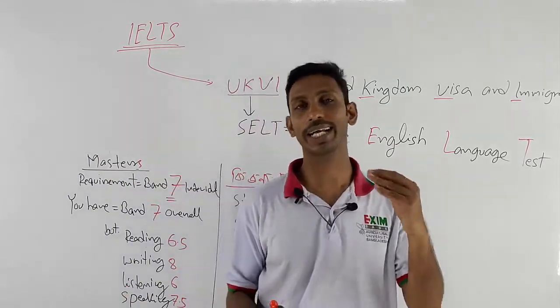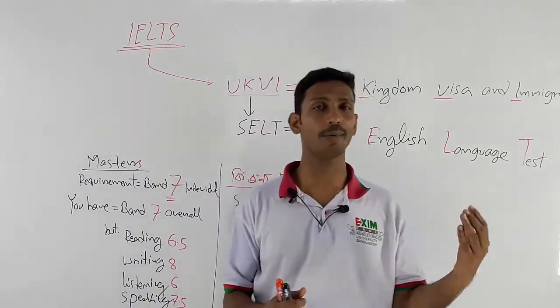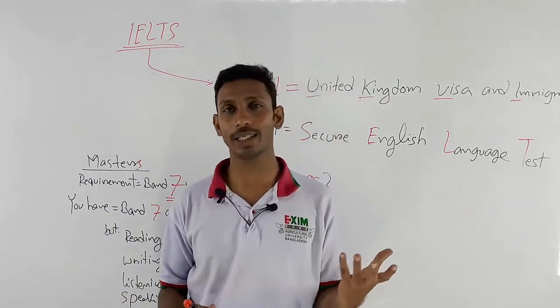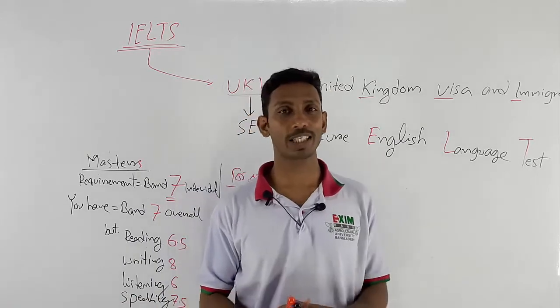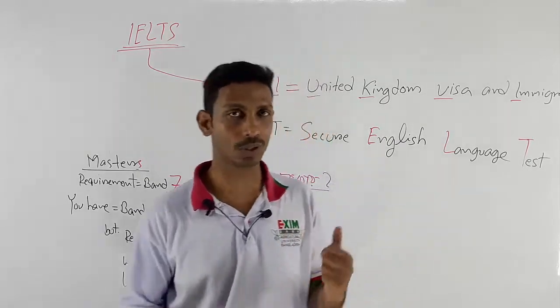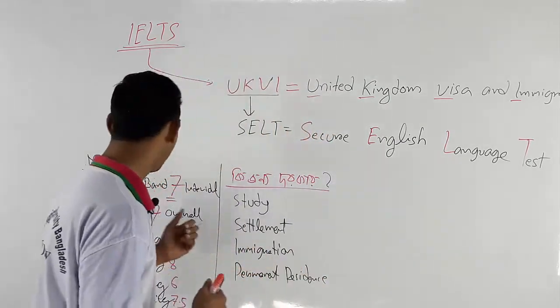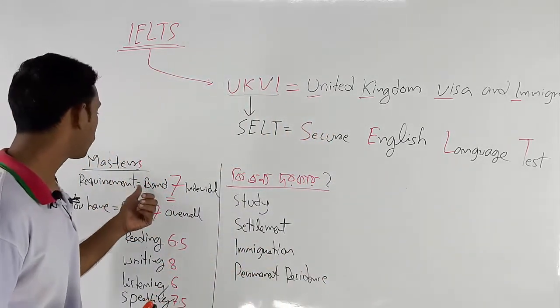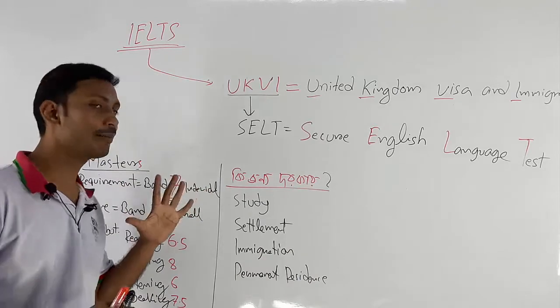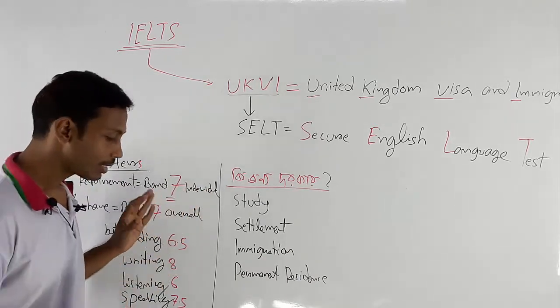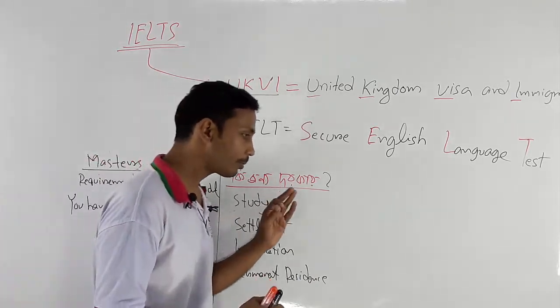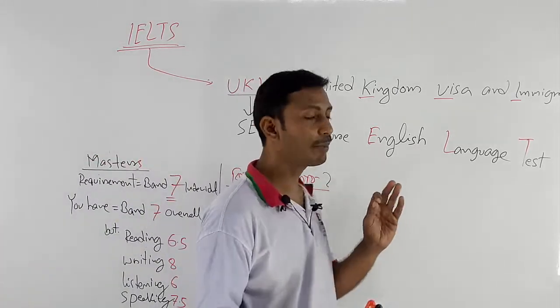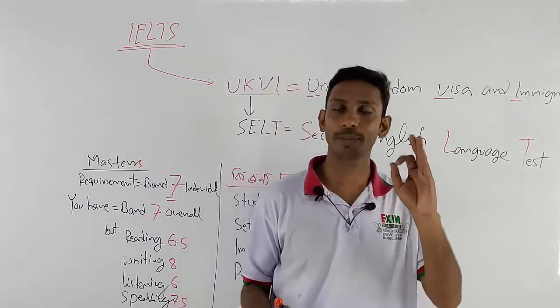For a master's program in Canada or New Zealand, you typically need a band 7. The band 7 requirement applies broadly across universities in these countries.